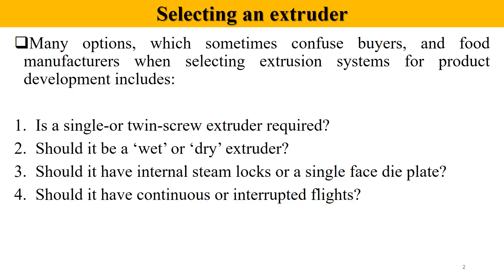Many options sometimes confuse buyers and food manufacturers when selecting an extrusion system for product development. These include: Is a single or twin screw extruder required? Should it be a wet or dry extruder? Should it have internal steam locks or a single case dry plate? Should it have continuous or interrupted flights? When any manufacturer wants to install an extruder, first of all he thinks about which extruder to install — single screw or twin screw.